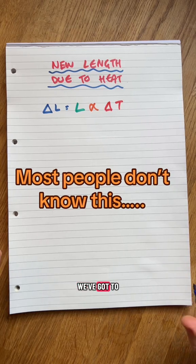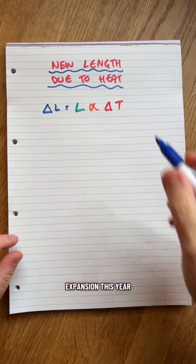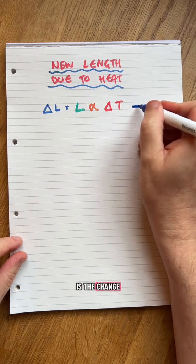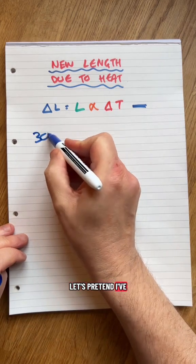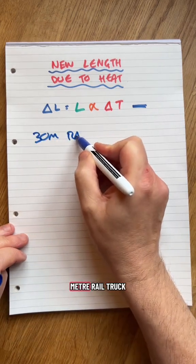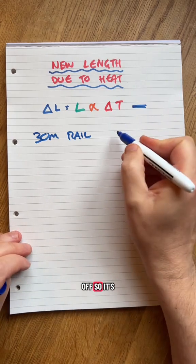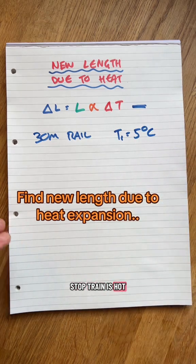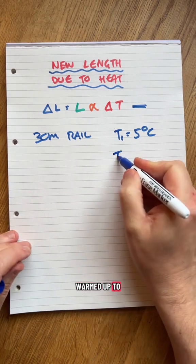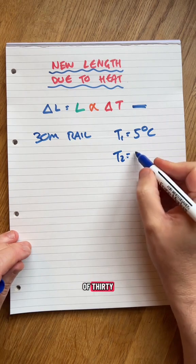Some more heat. So this one we've got to work out the new length due to the expansion this year. The change in length is due to the heat. Let's pretend I've got a 30 meter rail track and it starts off at 5 degrees C. This is why they stopped trains when it's hot, and it's been warmed up to a second temperature of 30.